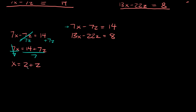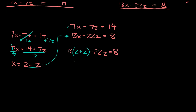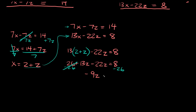Now that we know x equals 2 plus z, we plug it into our other equation: 13 times (2 plus z) minus 22z equals 8. Distributing gives us 26 plus 13z minus 22z equals 8. Combining like terms, 13z minus 22z equals negative 9z. Moving 26 to the other side, we get negative 9z equals 8 minus 26, which is negative 18. Dividing both sides by negative 9, we get z is equal to positive 2.